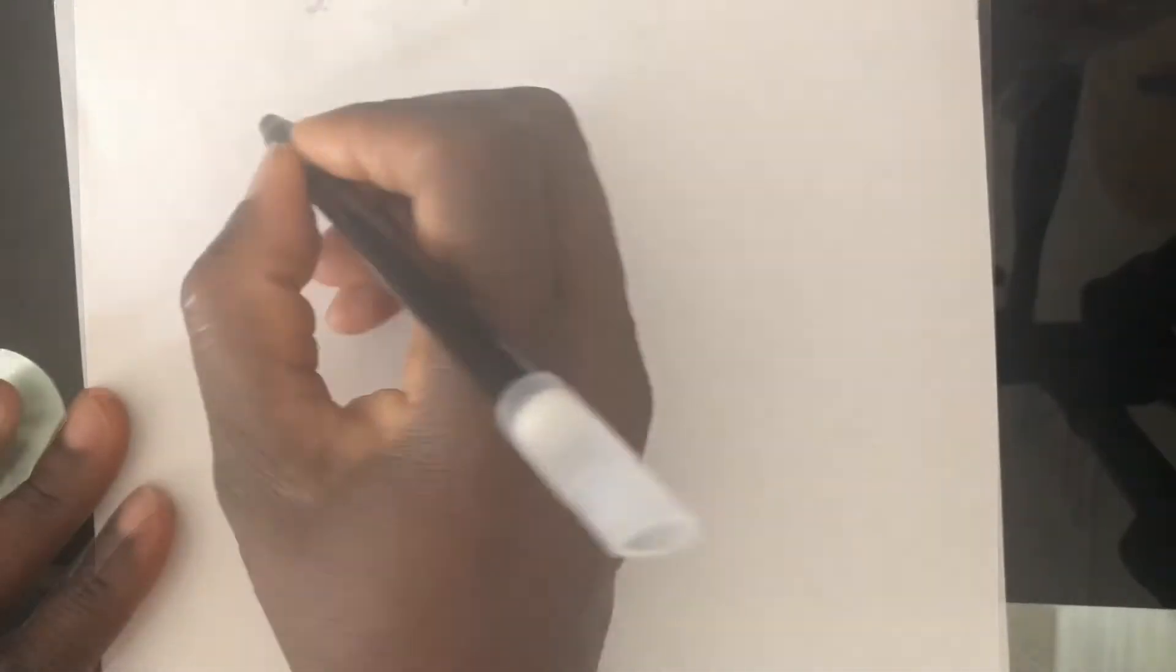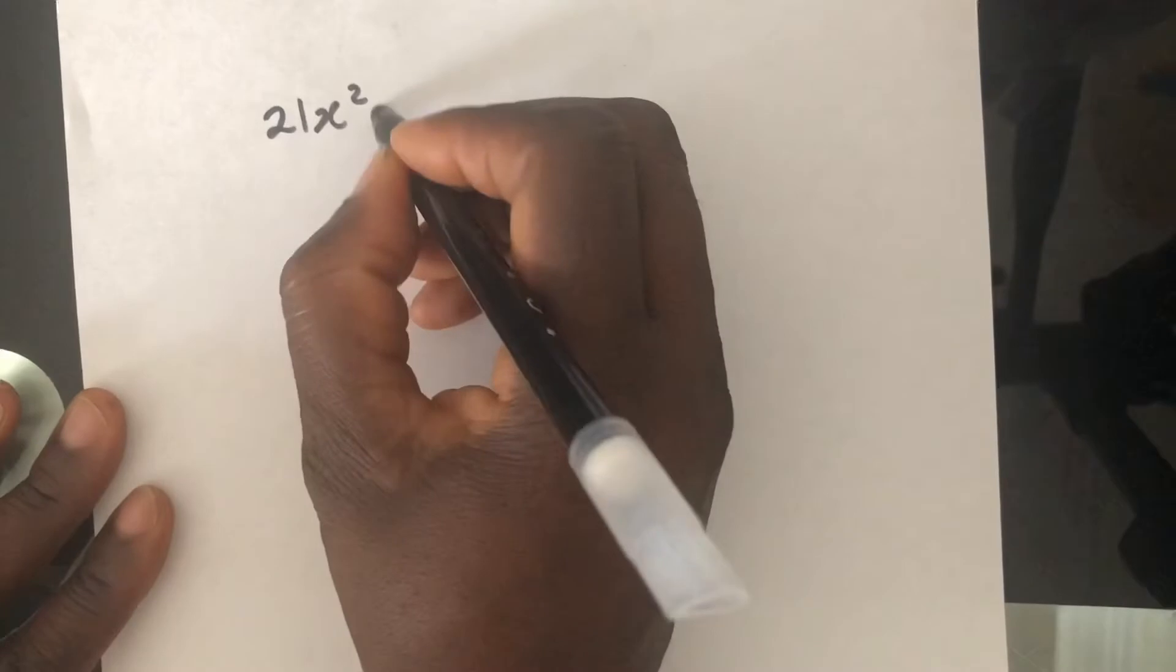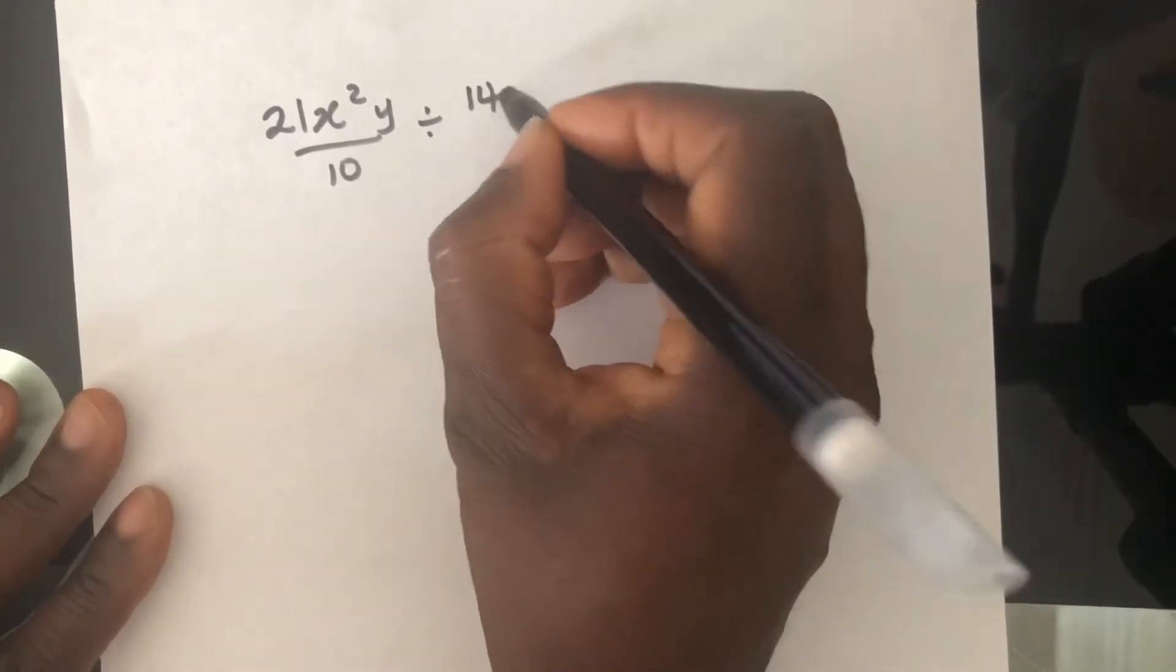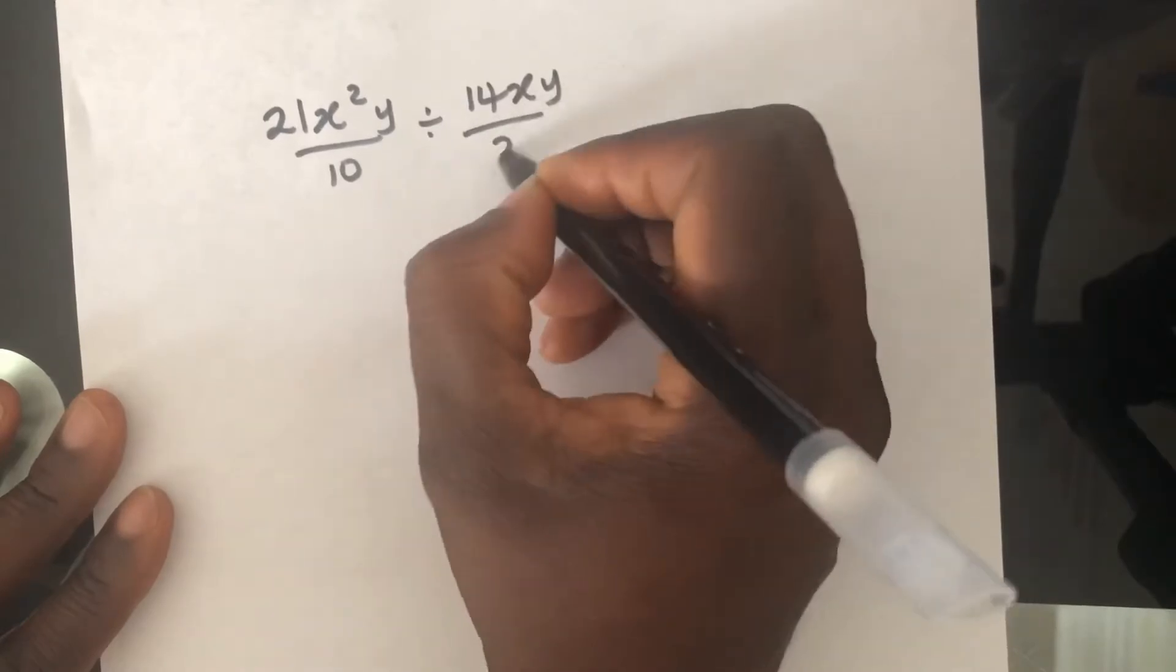Let's have a look at another example. 21X squared Y over 10 divided by 14XY over 22.